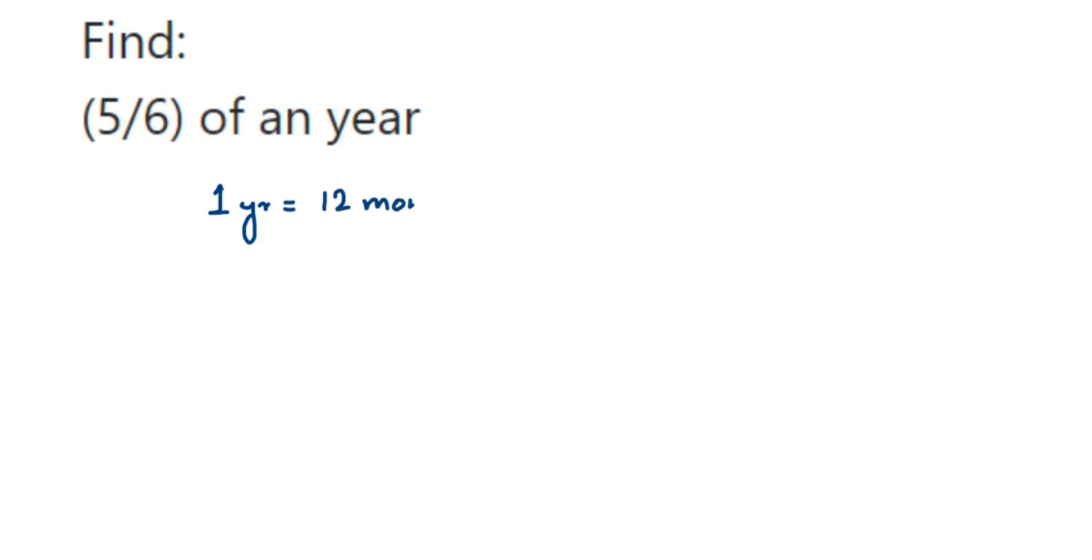We have to find out five-sixths of 12 months. So five-sixths of one year - yes, this is the same as five-sixths of... we know in one year we have 12 months. Now whenever we have 'of,' that represents multiplication or the product.